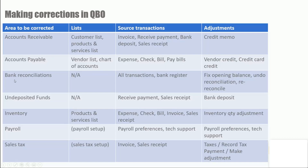Then we have bank reconciliations. Source transactions really are all the transactions that affect bank and credit card accounts, and you can view those on the bank register. The adjustments you might have to make are to fix the opening balance, undo a reconciliation, and redo a reconciliation. Next is undeposited funds — source transactions are receive payment and sometimes sales receipts, and adjustments involve adjusting the bank deposit, sales receipt, or even the receive payment transaction.